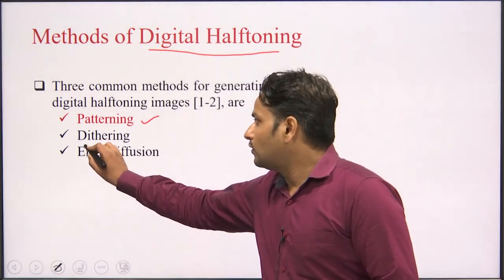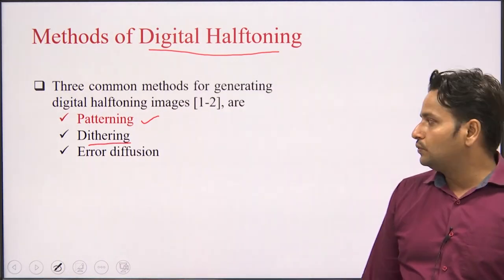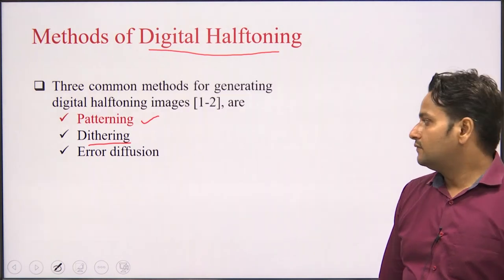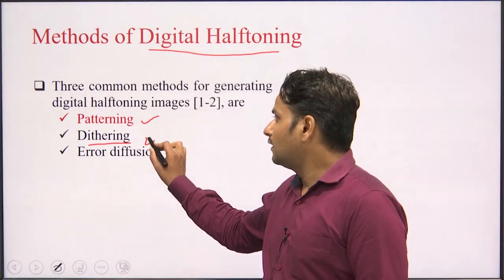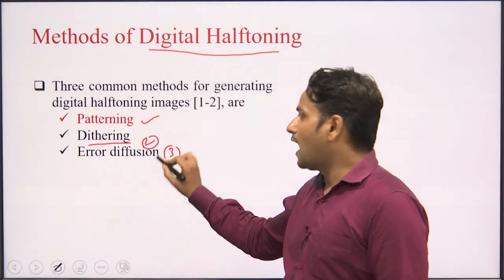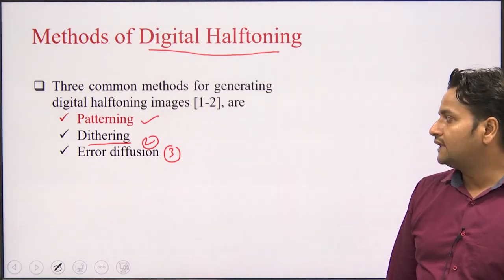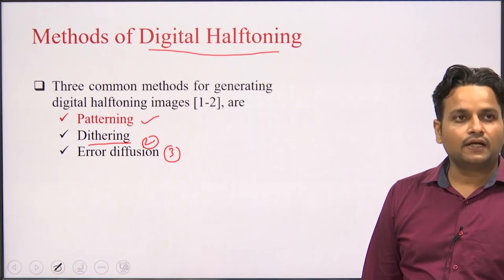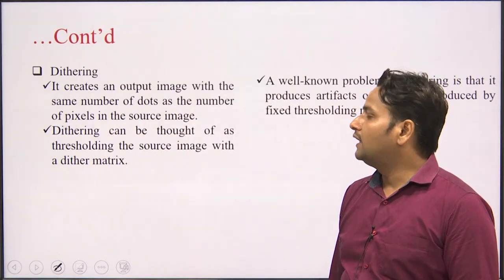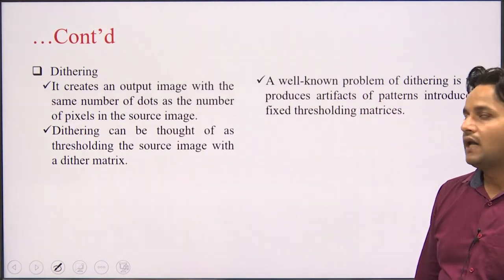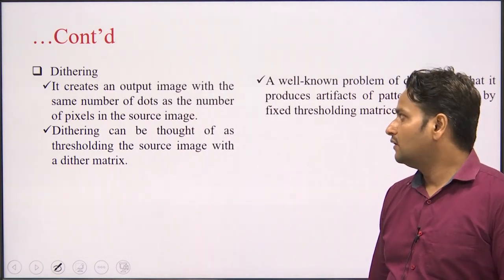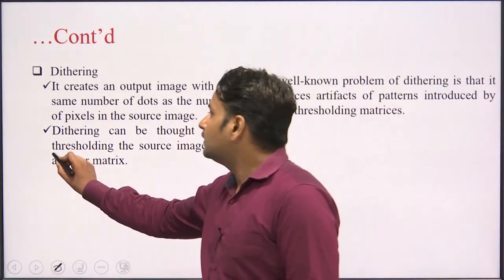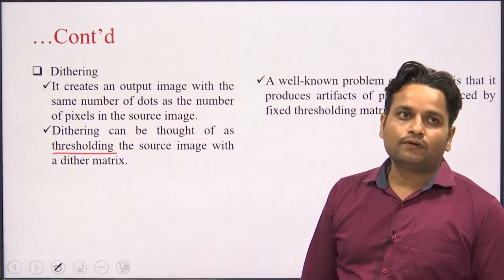In this lecture we will talk about another two digital halftoning methods: the second one is dithering and the third one is error diffusion. Here is the brief idea of the dithering digital halftoning process — the threshold is playing a very important role here.